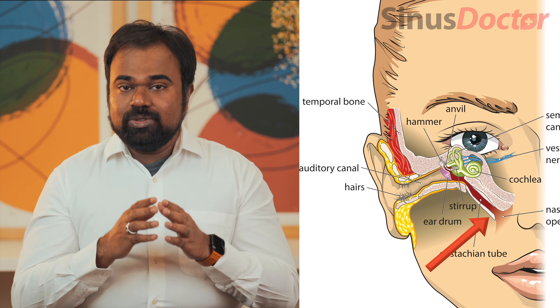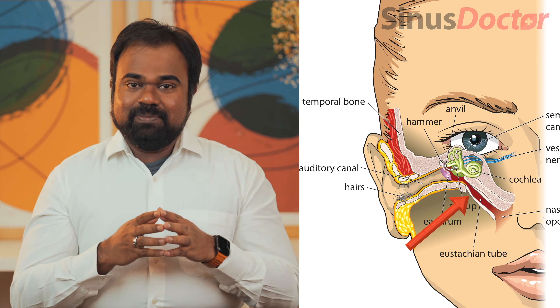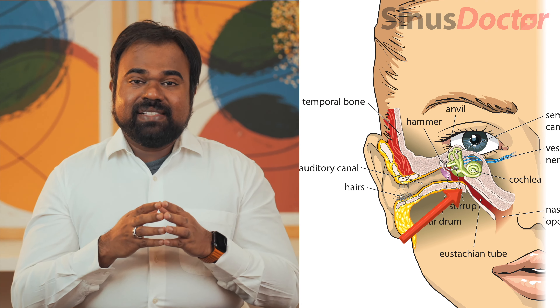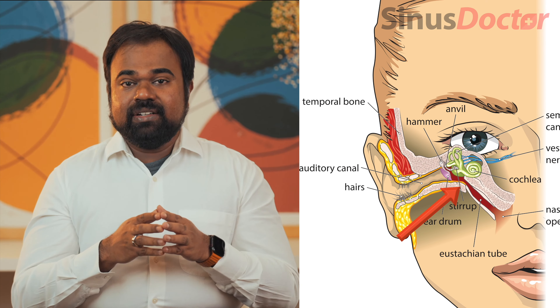When we breathe through the nose, air reaches the back of the nose where two tubes called Eustachian tubes ventilate the ears. Because of the deviated nasal septum, if this ventilation is affected, there can be fluid formation in the eardrum area and sometimes even holes in the eardrum.